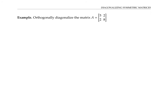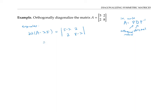Let's finish with an example. We'll orthogonally diagonalize the matrix given here — that means writing A as P D P inverse where D is a diagonal matrix and P is an orthogonal matrix. To do this, we start by finding the eigenvalues, since those go into our diagonal matrix D. Writing down the characteristic polynomial, the determinant works out to an expression that factors into lambda minus nine times lambda minus four. Setting that equal to zero, the eigenvalues are nine and four.